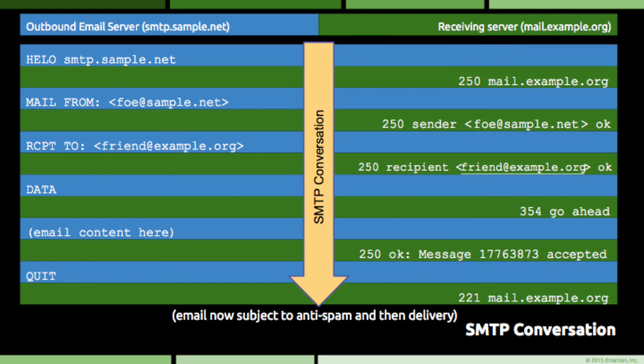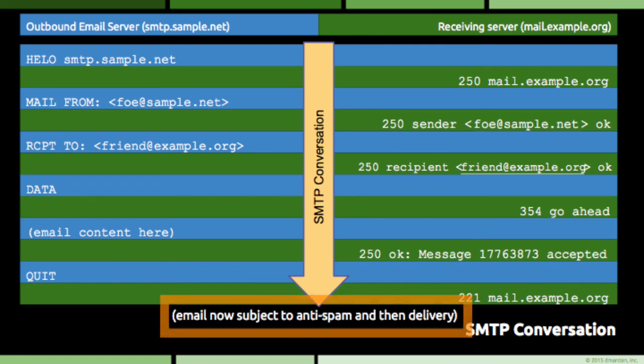In stripped-down form, this is how SMTP works. After the receiving server accepts the piece of email, the email is likely subject to things like anti-spam scanning, DMARC checks, and then maybe on to delivery to an inbox.